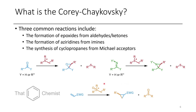Additionally, you could do addition into a Michael acceptor, which will form a cyclopropane. But in this case, instead of using a typical sulfonium, we use a sulfonium oxide. And this will usually add to the alkene instead of the ketone.